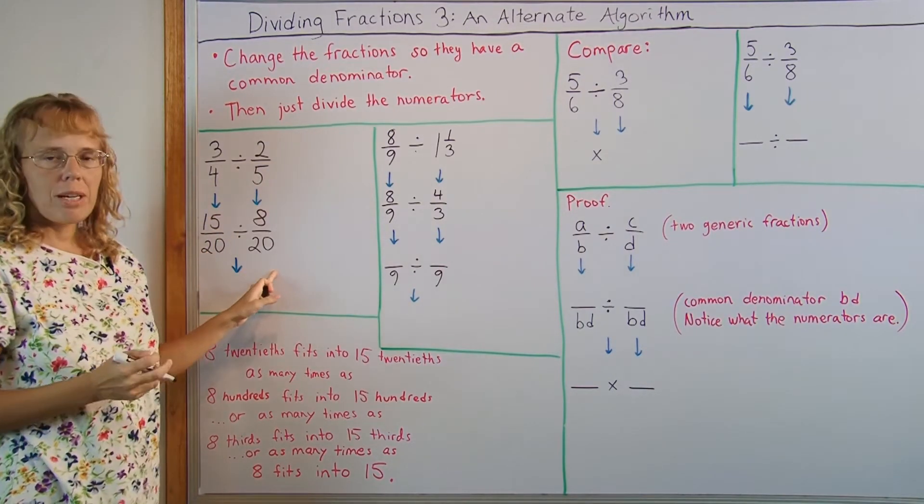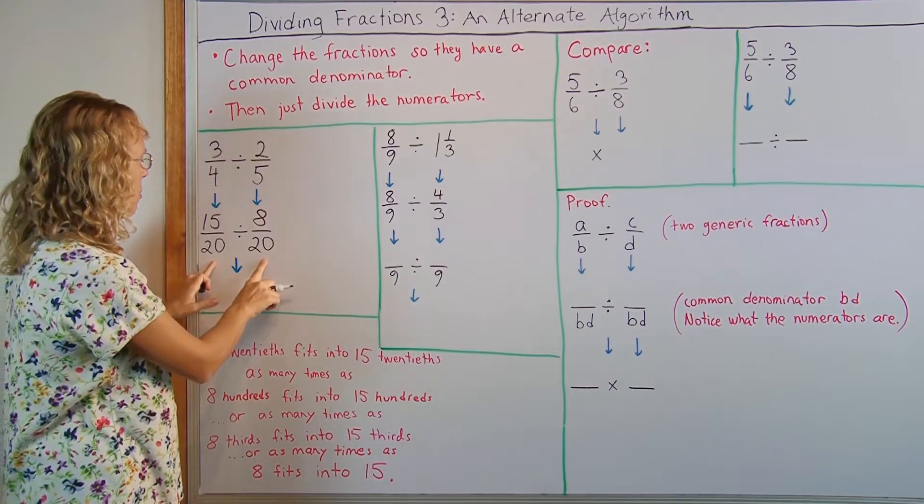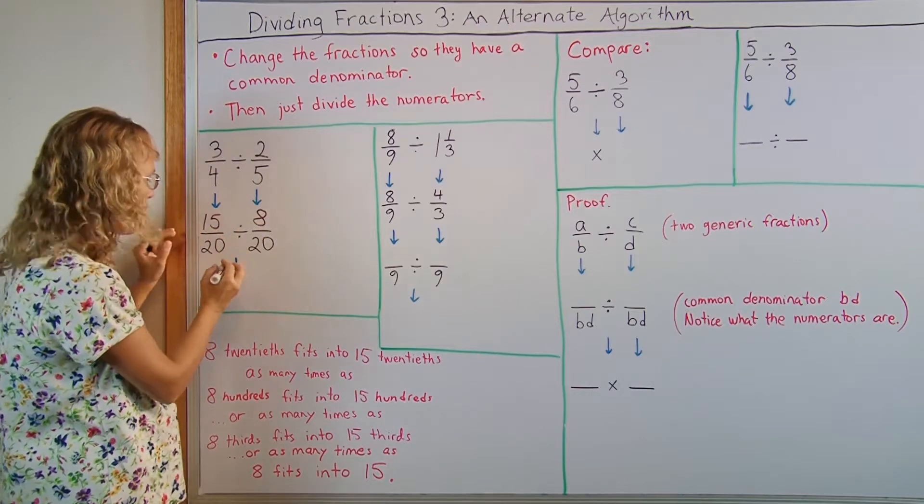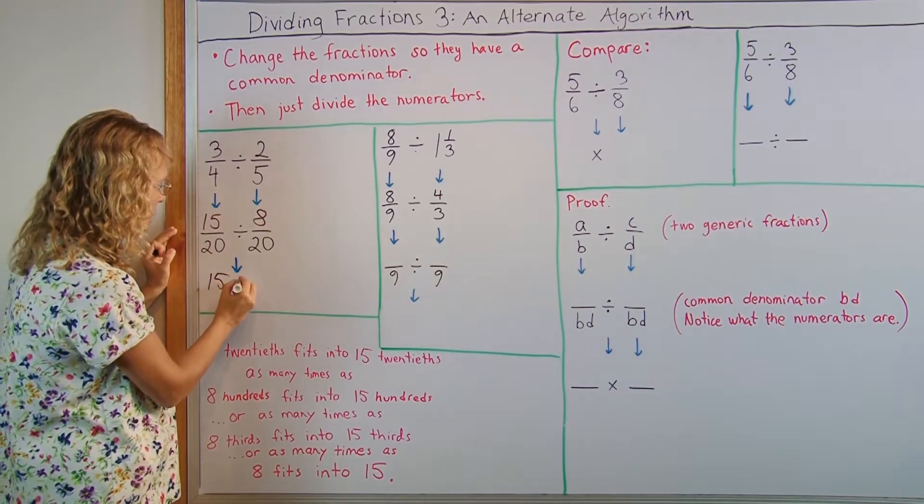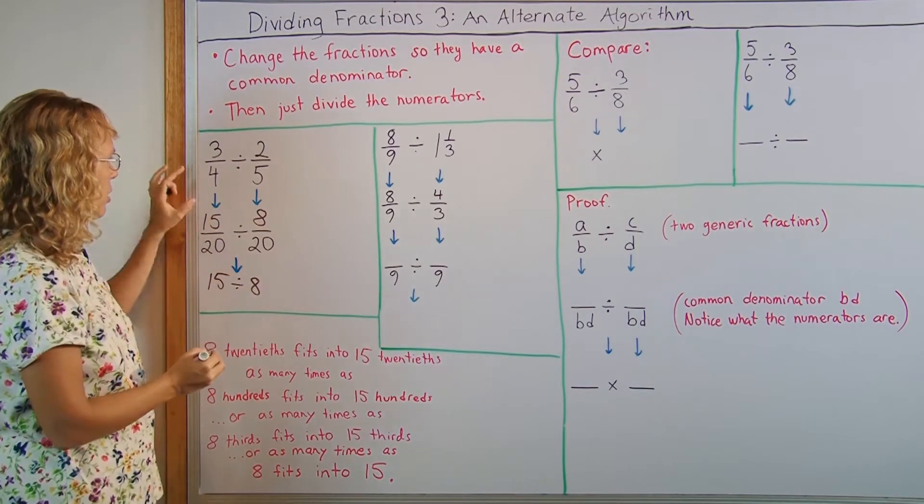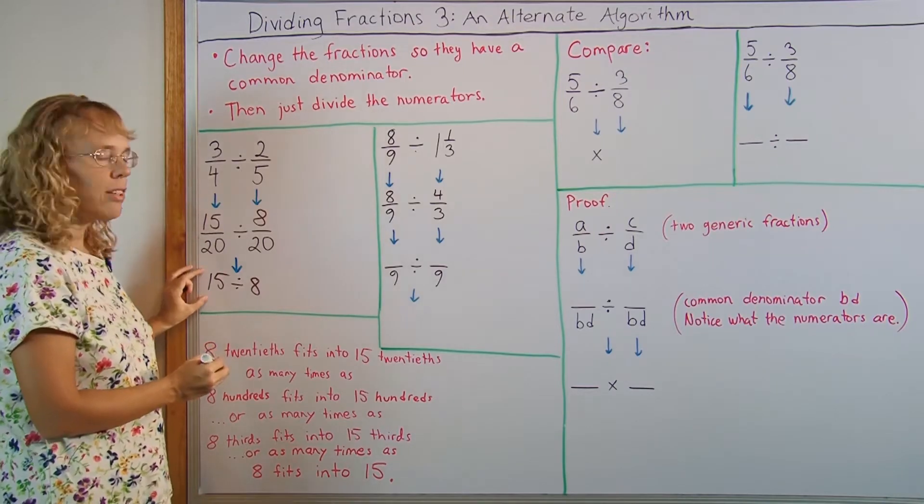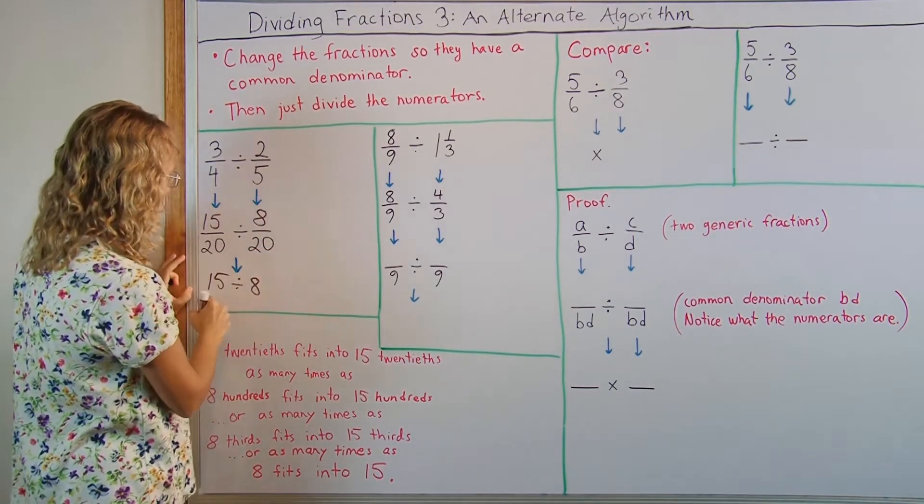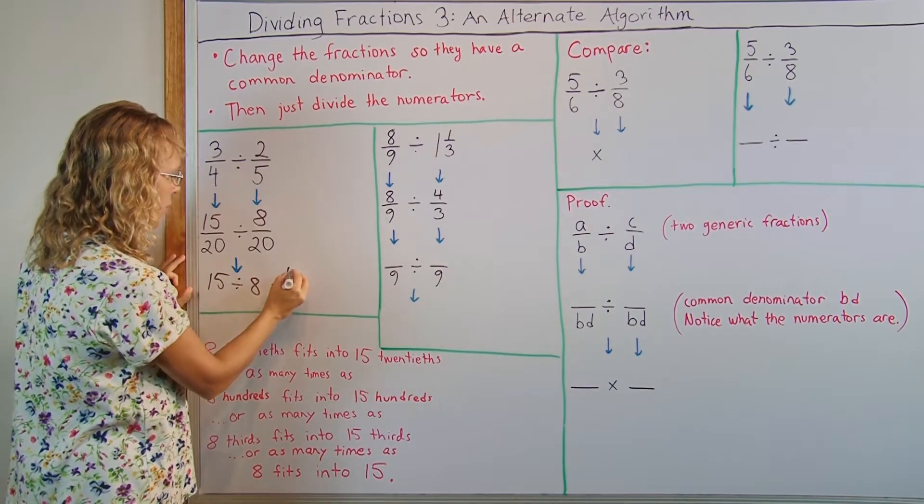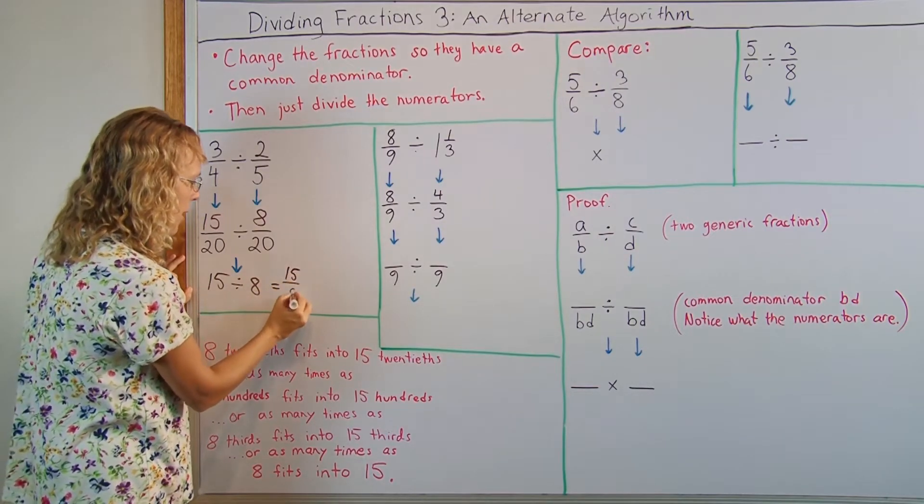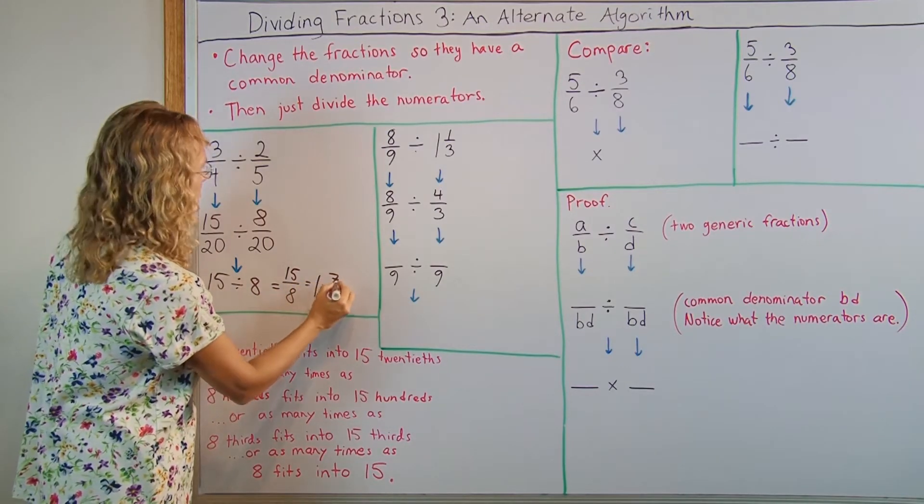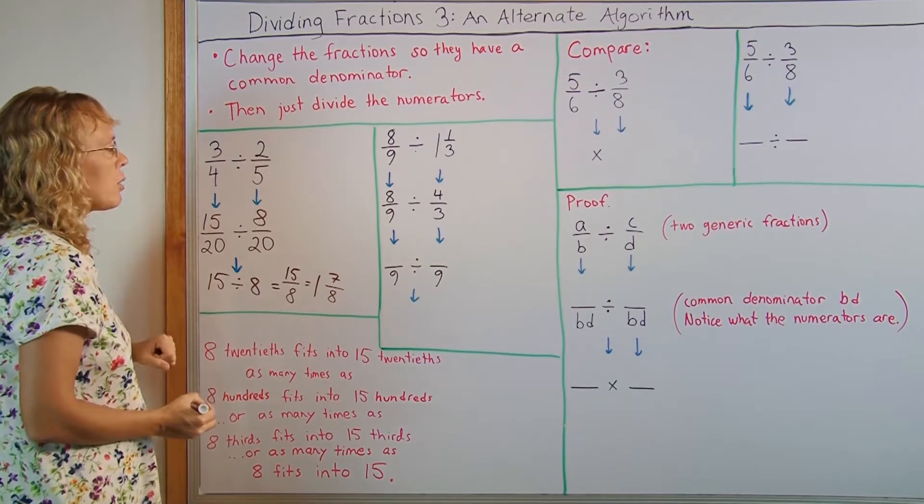And once I've gotten my fractions, so they have the same denominator, I forget the 20s, the denominators, and I just divide the numerators. 15 divided by 8. So the division problem has been changed into 15 divided by 8, but it will have the same answer as this one. The answer to 15 divided by 8 is 15 over 8, which is 1 and 7 eighths.